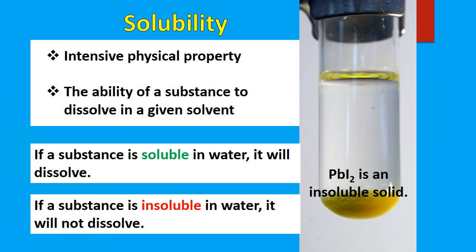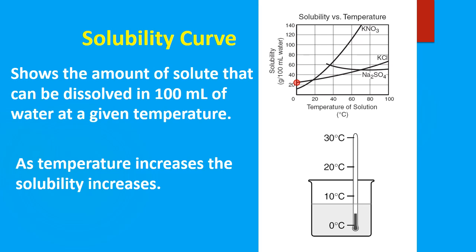When we talk about solubility, solubility is an intensive physical property. It describes how well a substance will dissolve in any given solvent, and what we're talking about here as the solvent is water. When substances dissolve, they're going to break apart into the smallest units. We know ionic compounds break apart into the ions. If a substance does not dissolve in water, we're going to describe it as being insoluble — like lead iodide, which does not dissolve in water.